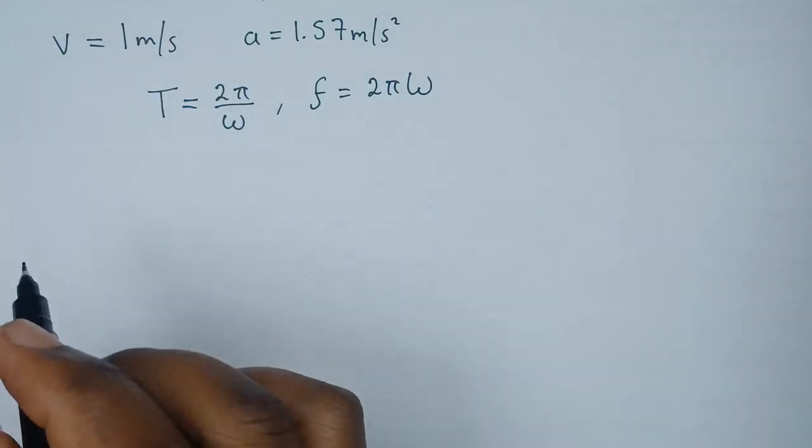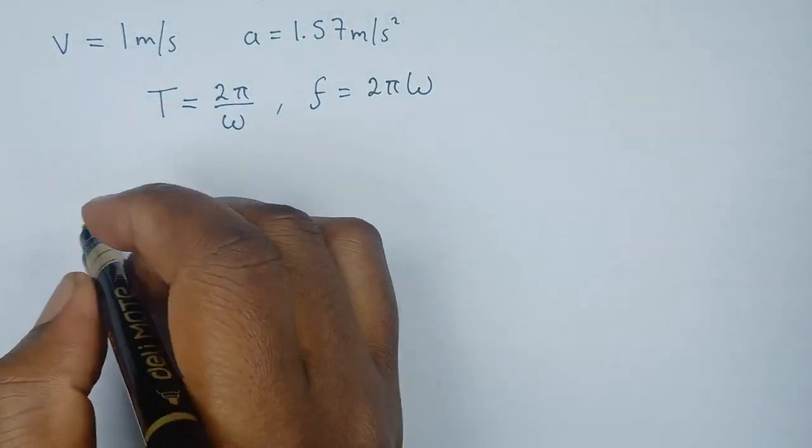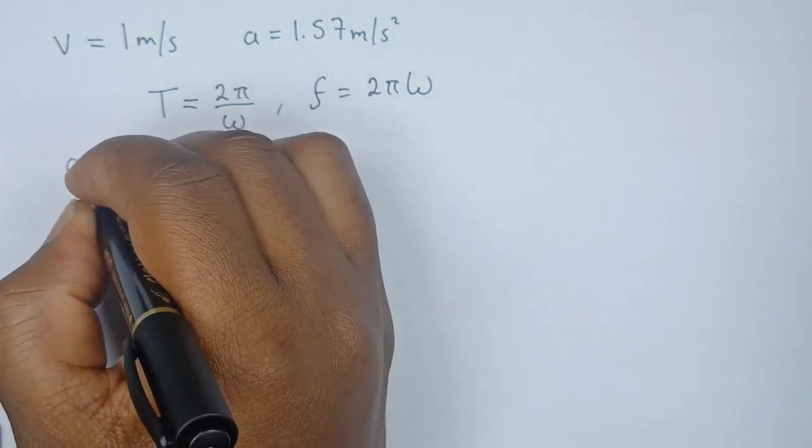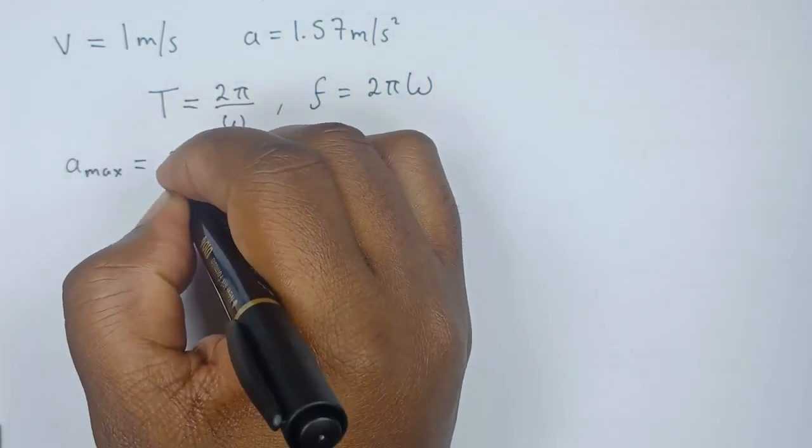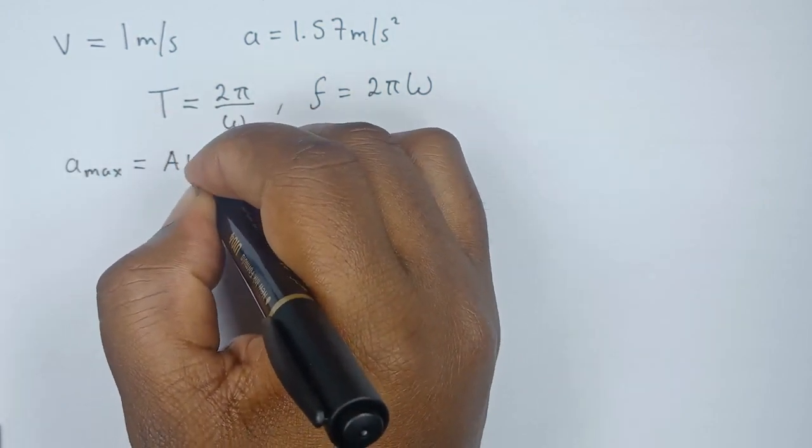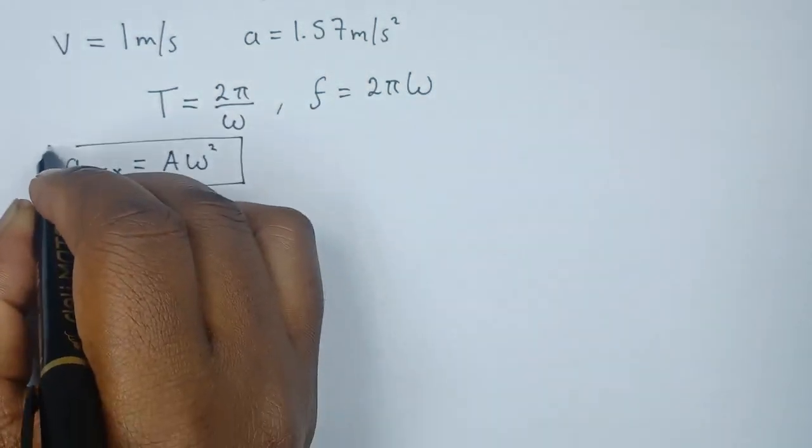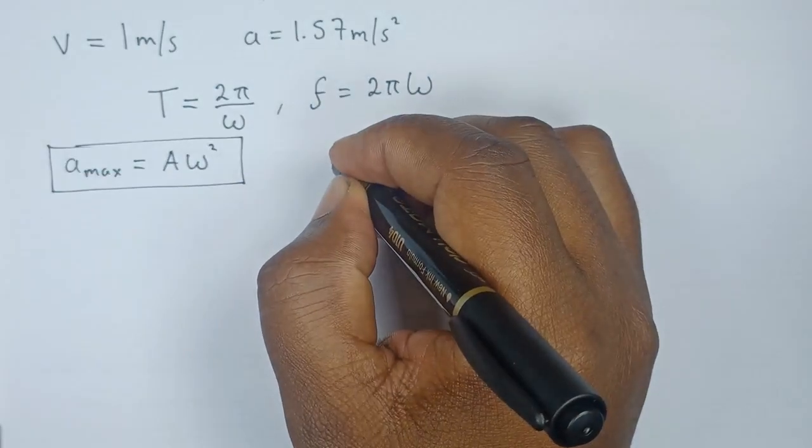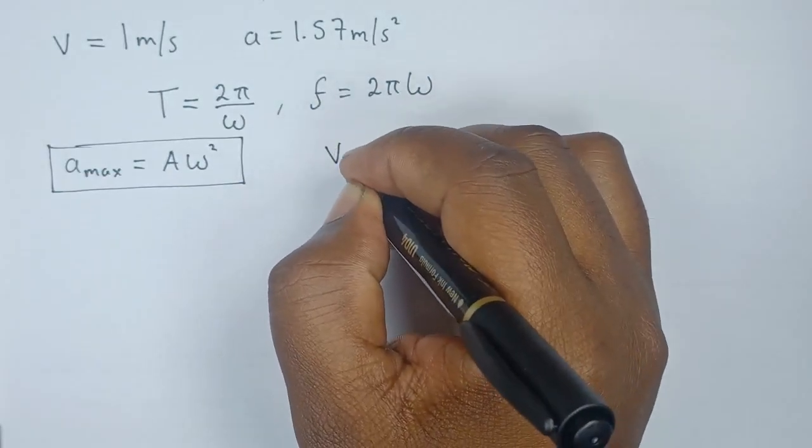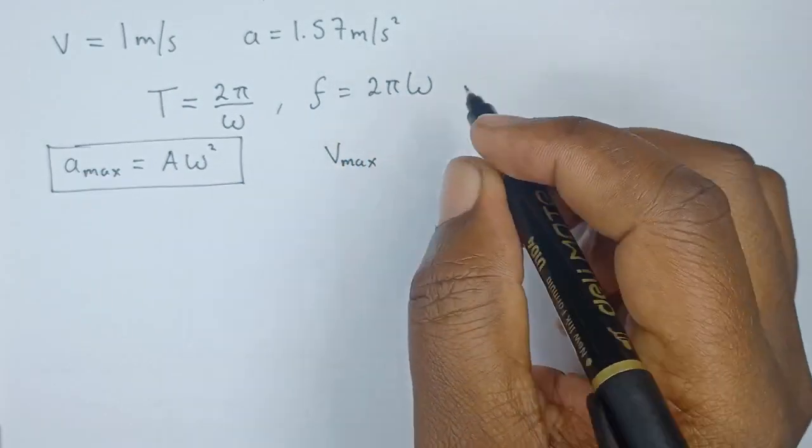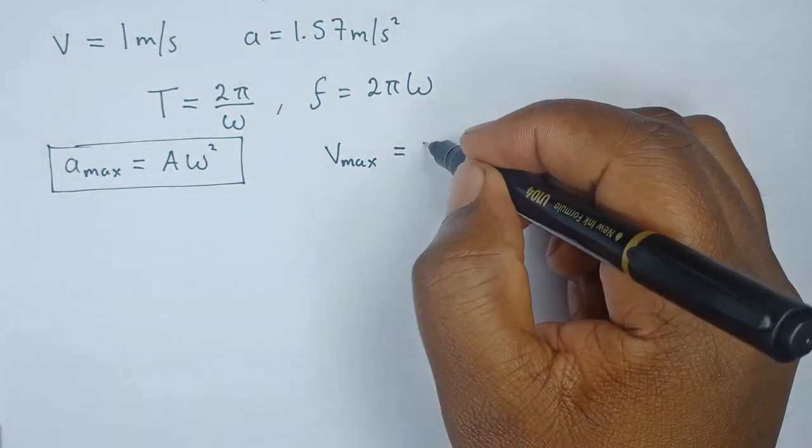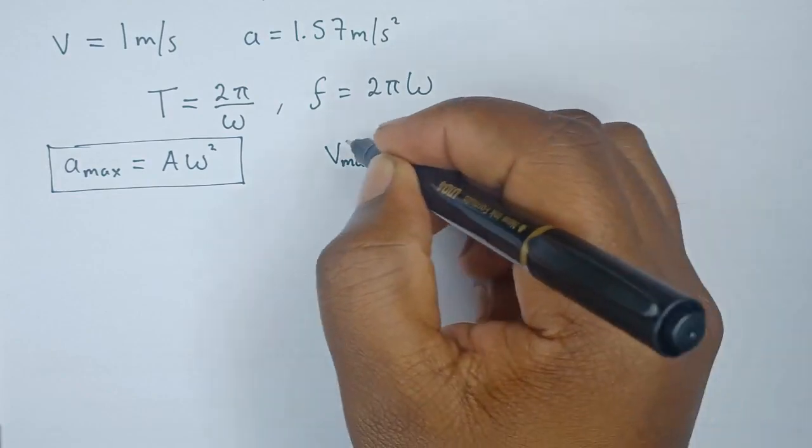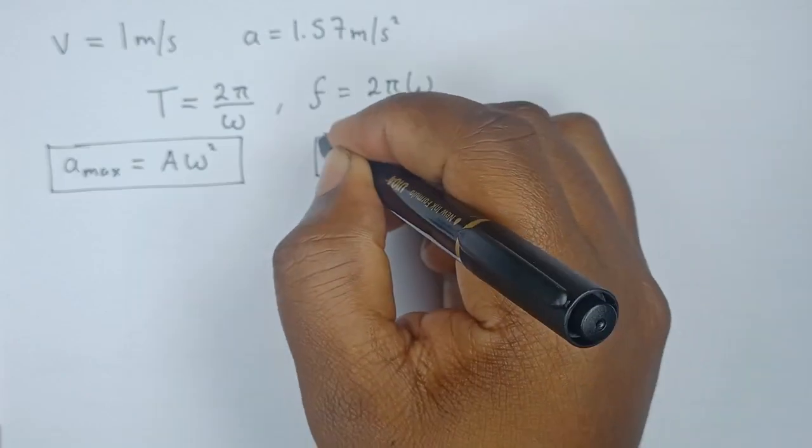From what we have, we can say that in simple harmonic motion the maximum acceleration is given by the formula a_max = Aω², where A is the amplitude. Then we also have maximum velocity, which is given by v_max = Aω.